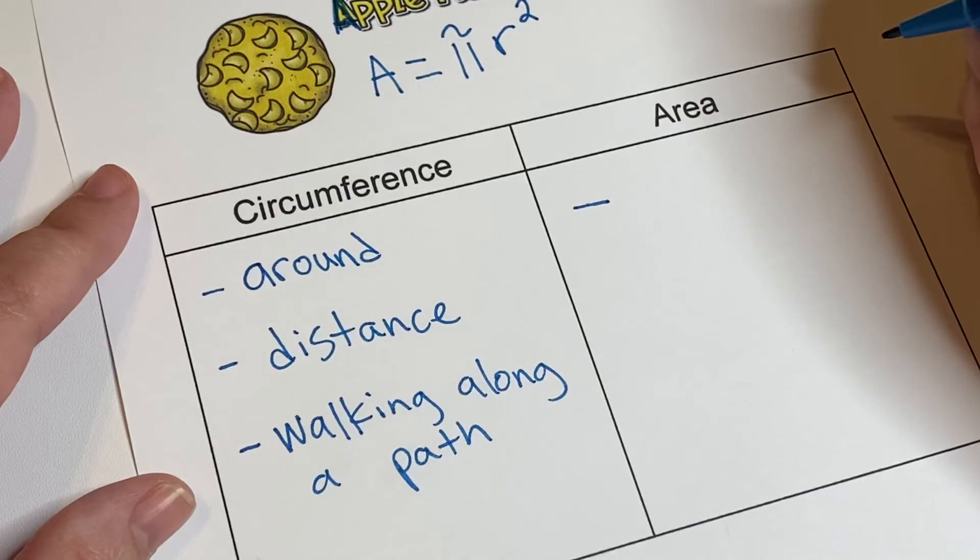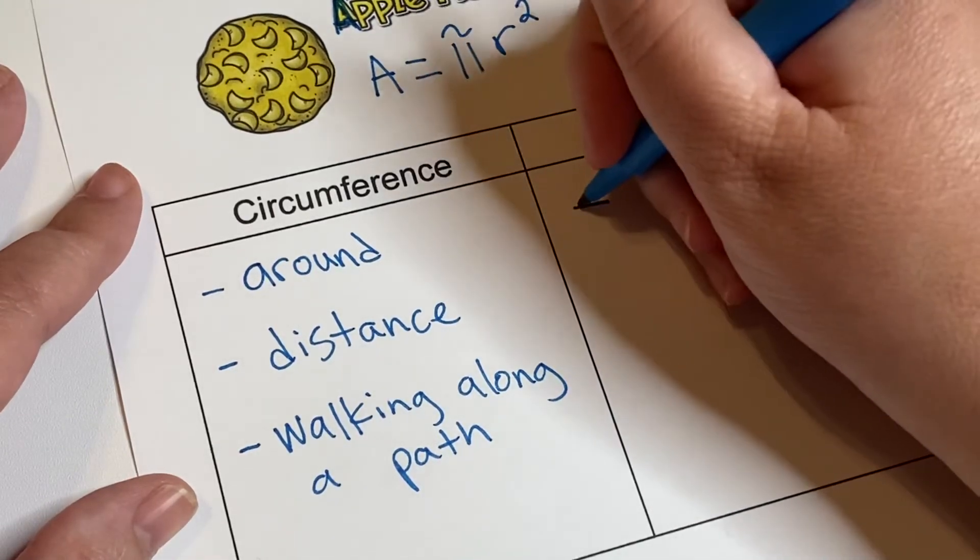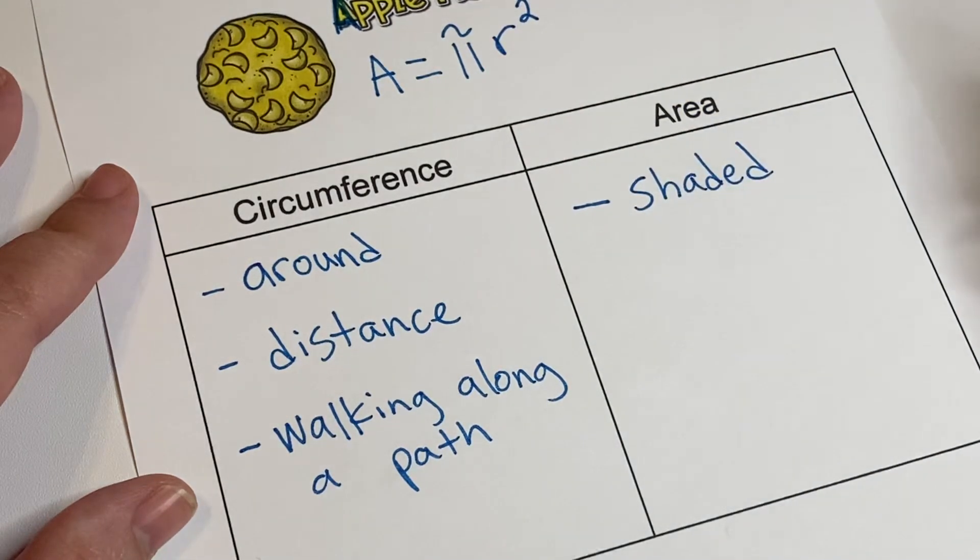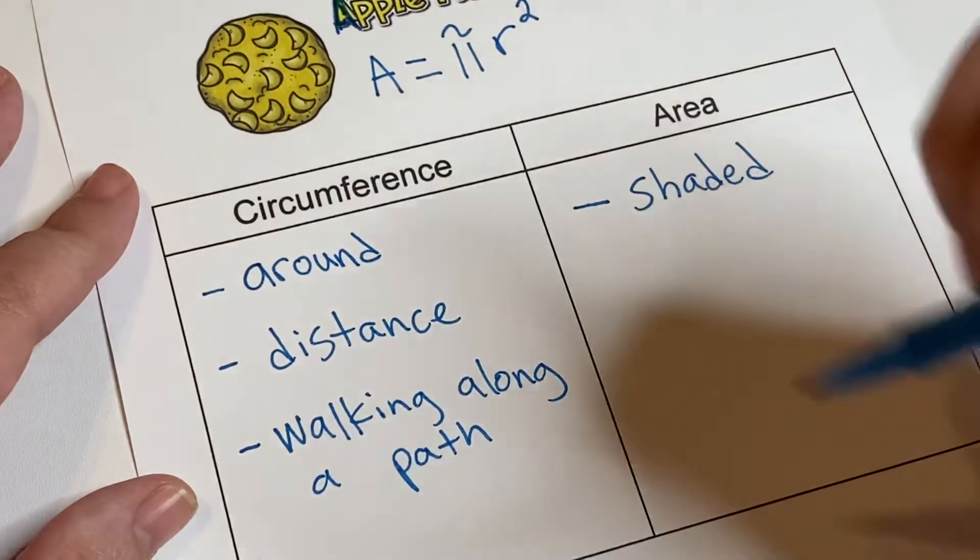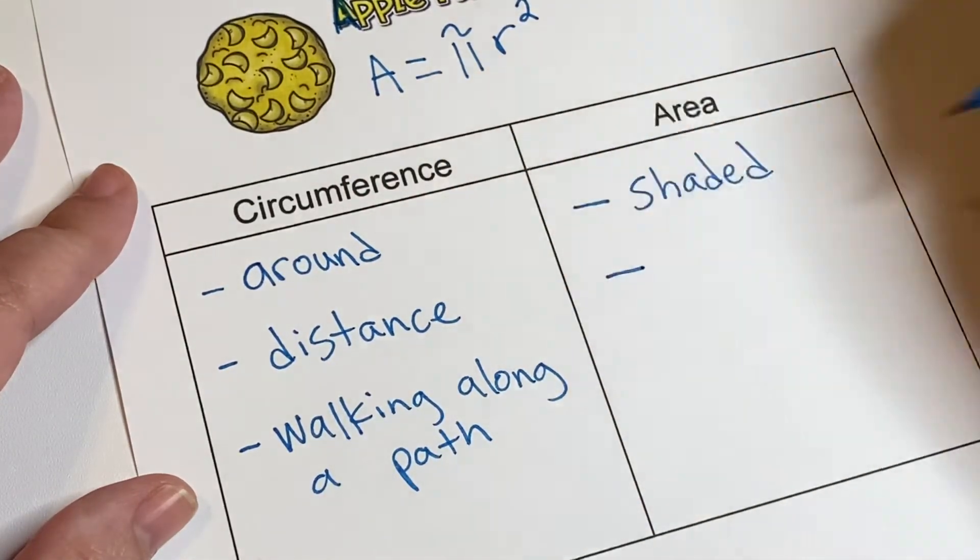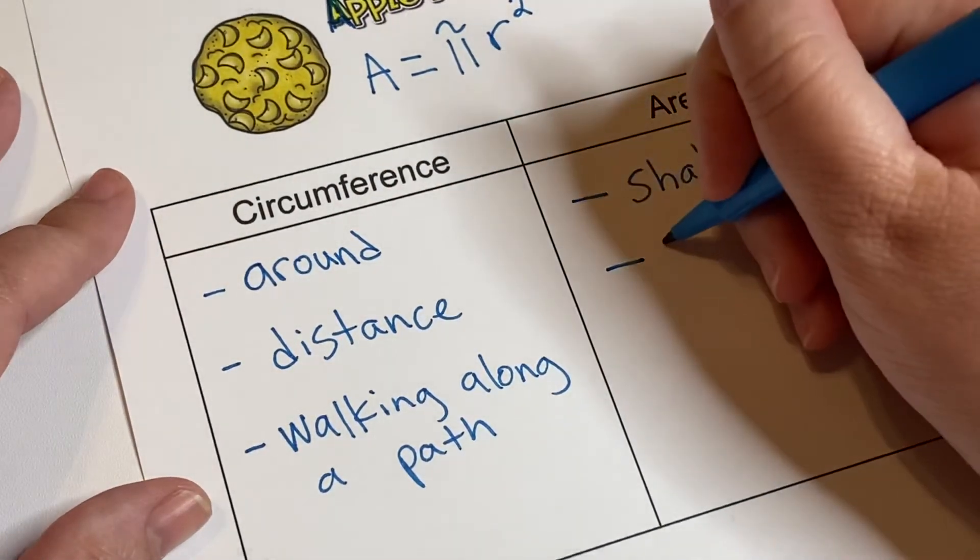Now for area, area is the shaded part of a circle. So not the drawing around part, but the part you could shade in the middle. And it's not a distance, it's two-dimensional, 2D.